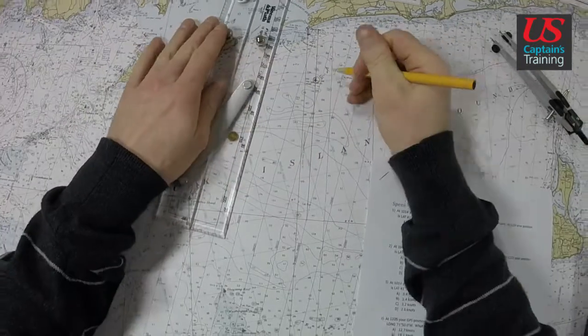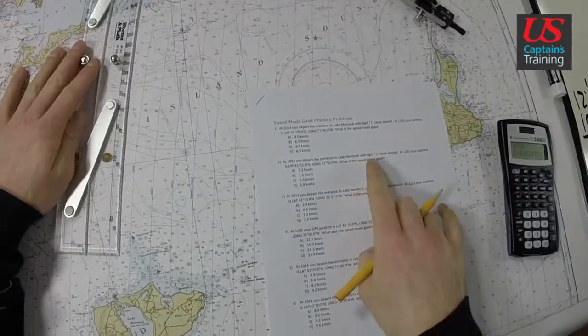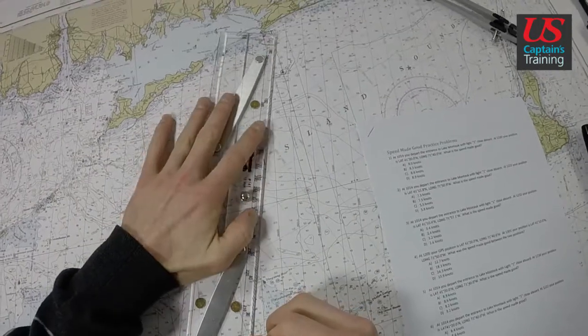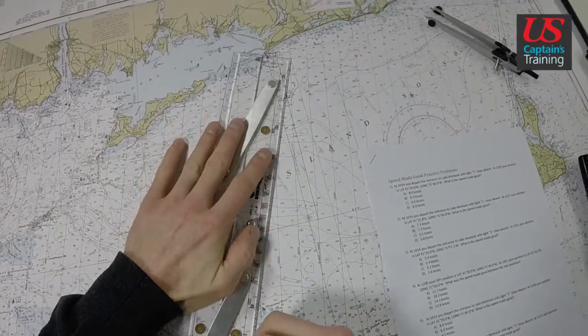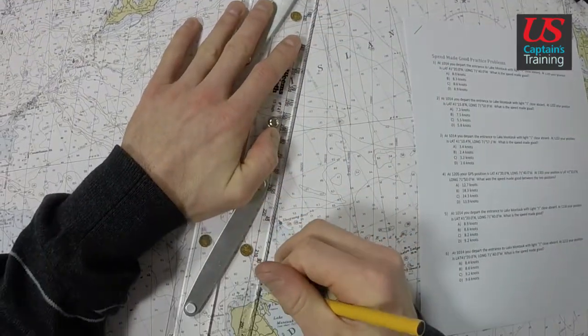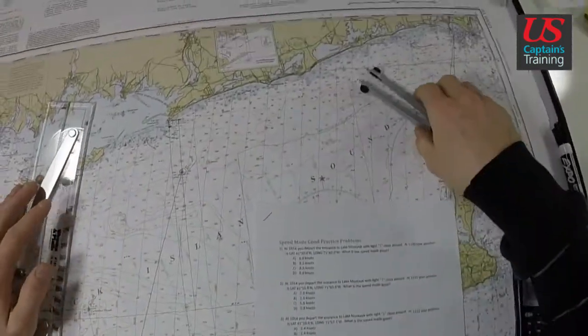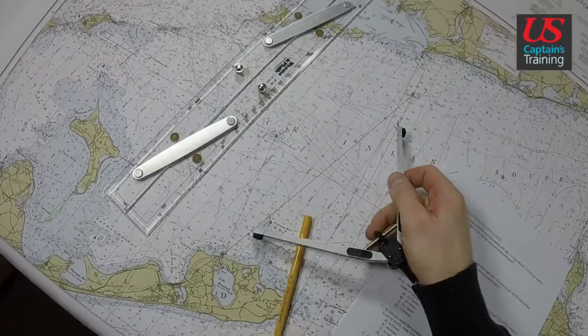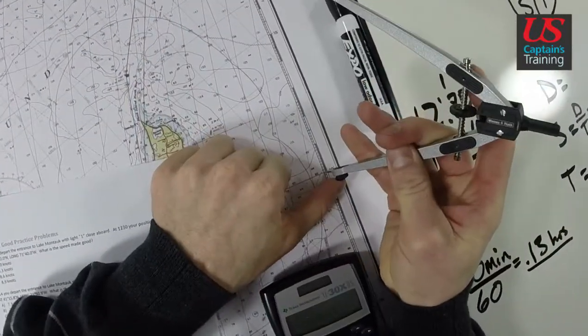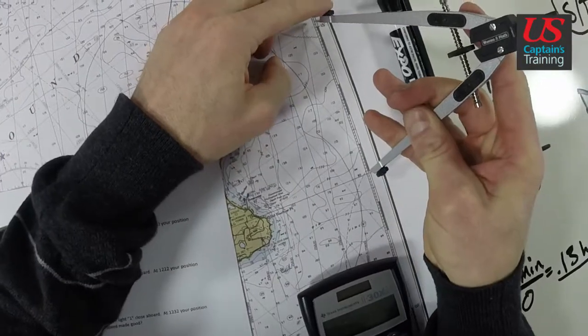We can go from the entrance to Lake Montauk with light one close aboard to that latitude and longitude, which happens to end on that safe water mark. Now we take, this is pretty long. Our dividers won't do it. So what I do is get five nautical miles on the dividers and get it very accurately.